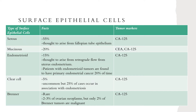Surface epithelial cells are the most common type we'll be discussing today. Serous is the most common subtype, making up about 55 percent. It is thought to arise from the fallopian tube epithelium and has CA-125 elevation as its predominant tumor marker.